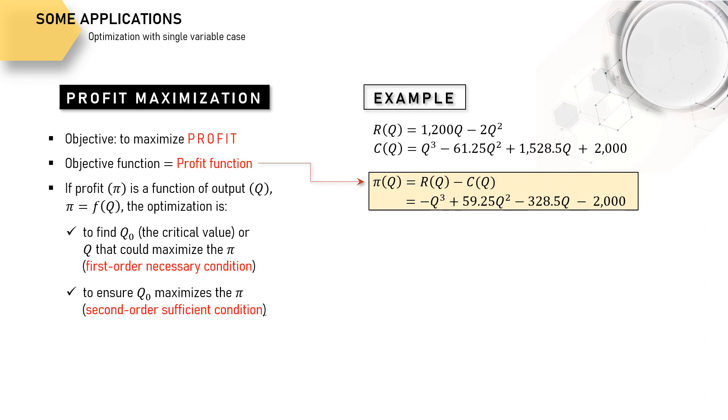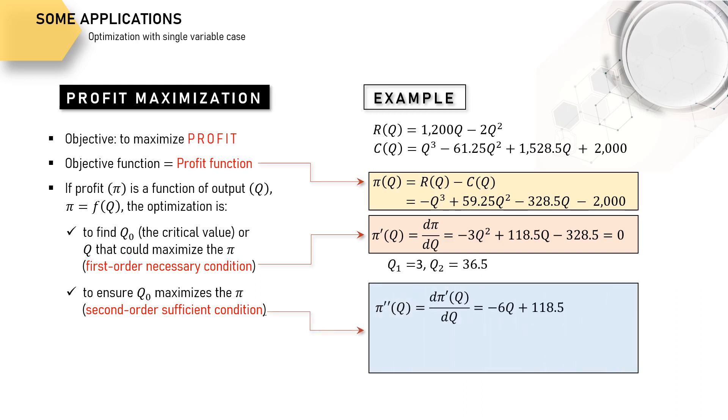The first order condition requires us to equalize the first derivative of the objective function to zero, like this. As a result, we now have two critical values here. Which critical value or output level could maximize the profit? Now we just have to check the second order condition.